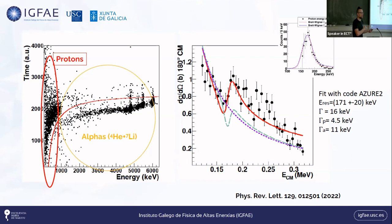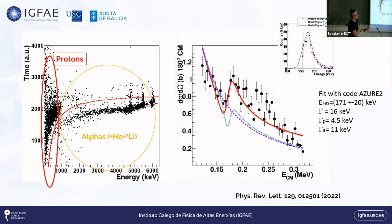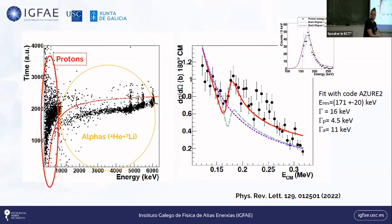What's important to notice is that the total width is much smaller than predicted from a simple potential scattering calculation, assuming a resonance width of 12 keV as inferred from the beta-decay experiment. The conclusion is that either something is wrong in the width determination from the beta-decay experiment, or there's a channel exhausting some of the width — hopefully alpha particles that we couldn't observe due to contamination. From the fit, we obtain a resonance energy about 20 keV smaller than before, with a proton partial width of only 4.5 keV and an inferred alpha partial width of 11 keV.